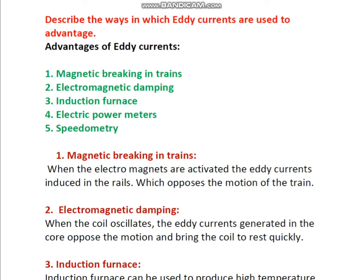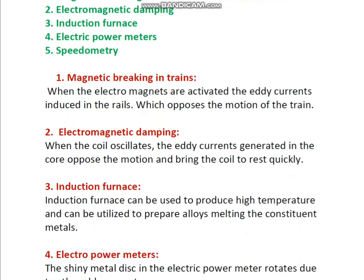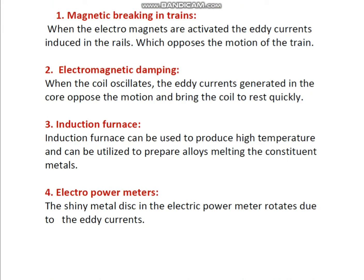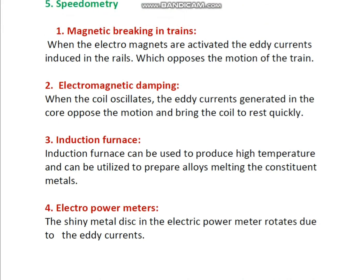The main headings of advantages of eddy currents are: first, magnetic braking in trains; electromagnetic damping; induction furnace; electric power meter; and speedometry.